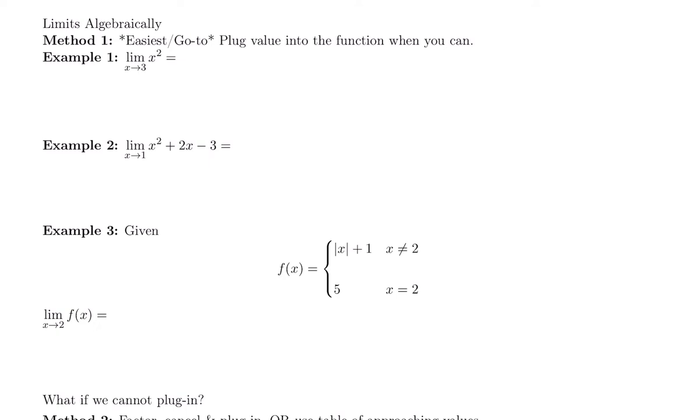We're just going to practice plugging into functions. So this first piece here, we have the limit as x goes to 3 of x squared. We're going to plug in that 3 into the function x squared. So I'm going to replace that x with a 3 in parentheses squared. And I always recommend putting each x value in parentheses because if it's a negative number, the parentheses matter. So we have 3 squared, which is 9.